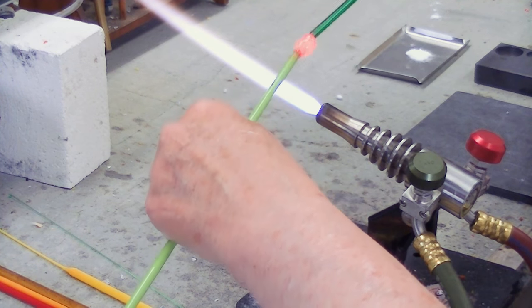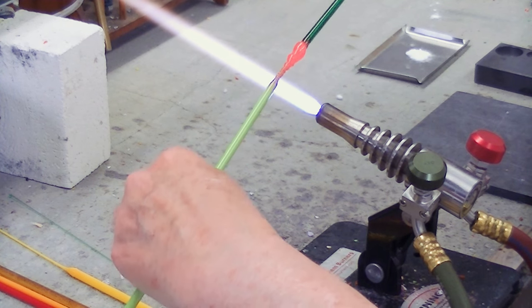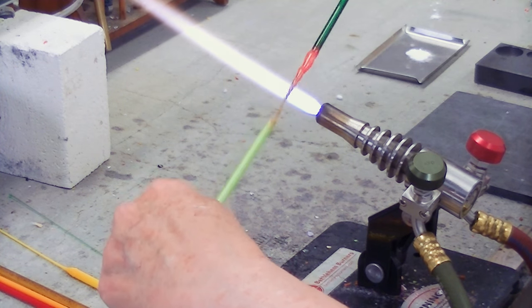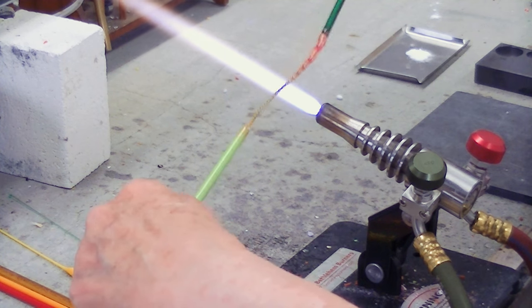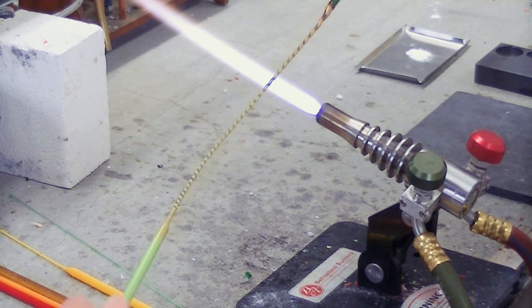You can either twist each hand so that they're twisting in an opposite direction, or you can hold one hand still and twist the other hand and pull the diameter size.